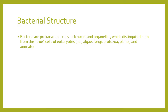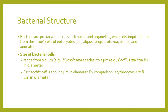Regarding prokaryotic structure, we have to understand that bacteria are prokaryotes — cells that lack nuclei and organelles, which distinguishes them from true cells or eukaryotes. True cells include those of algae, fungi, protozoa, plants, and animals. The size of bacteria ranges from a very small 0.2 micrometer, especially those belonging to the mycoplasma species, to 3 micrometers such as Bacillus anthracis. Your E. coli is about 1 micrometer in diameter, compared to RBCs which are around 8 micrometers in diameter.